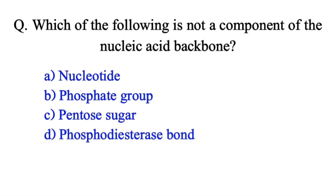Which of the following is not a component of the nucleic acid backbone? Option A: nucleotide. Option B: phosphate group. Option C: pentose sugar. Option D: phosphodiester bond. The correct answer is Option A: nucleotide.